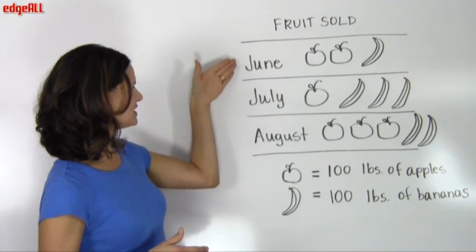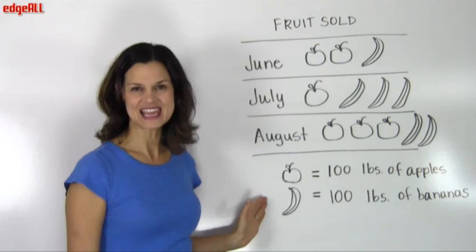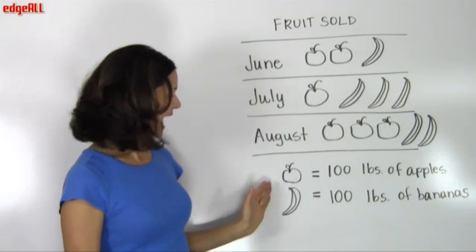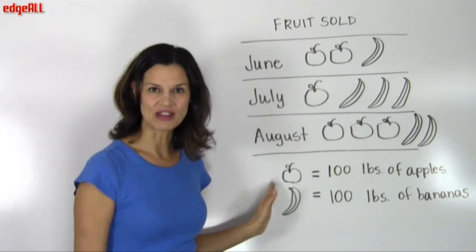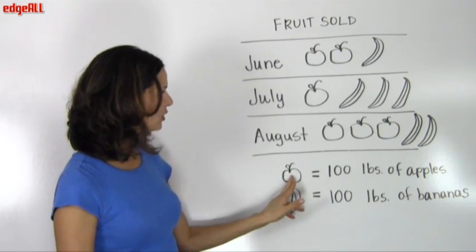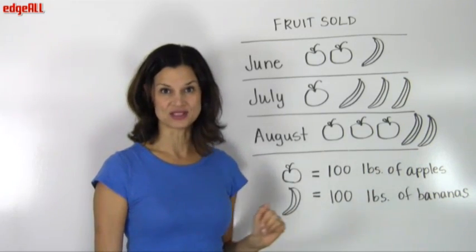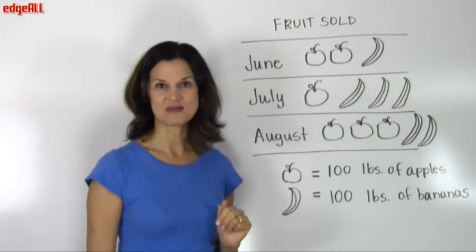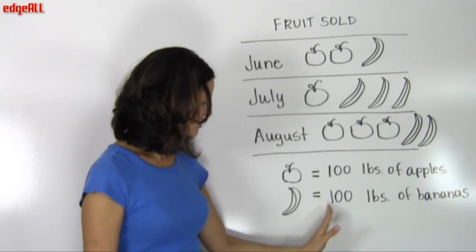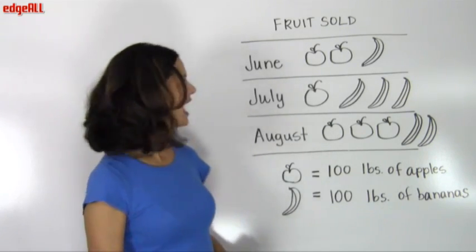We have the months of June, July, and August. And then we have our key here to tell us what value each symbol is worth. So for every apple I see in my graph, that's equal to 100 pounds of apples sold. For every banana that I see on my graph, that's equal to 100 pounds of bananas sold.